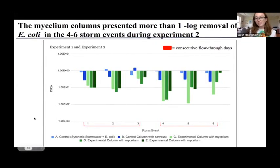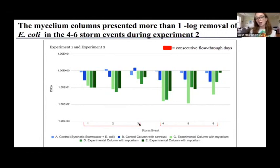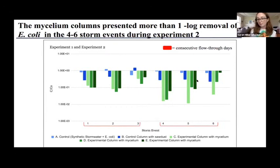For our second experiment, the first three storm events shown are from the first experiment, then after a drying period of about five to eight days we began the second experiment with storm events four through six. In storm events four through six there was an increase in removal by the mycelium-packed columns, shown as the green bars, with little change in the controls.